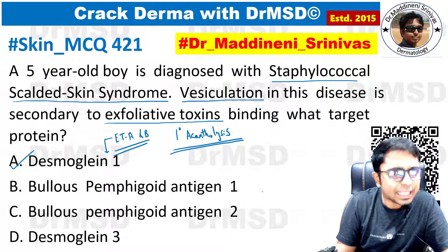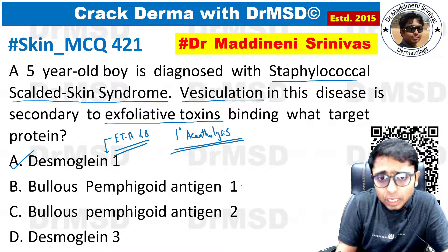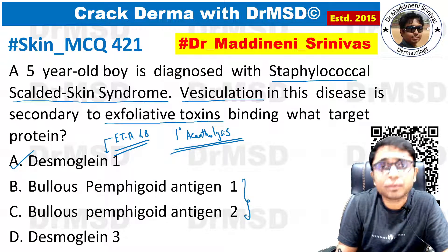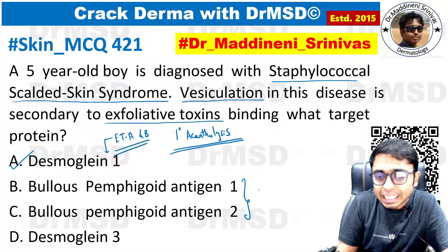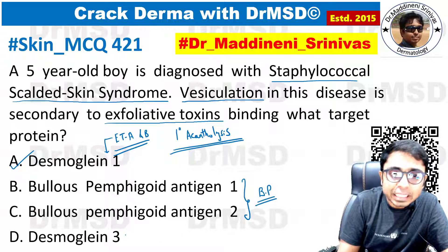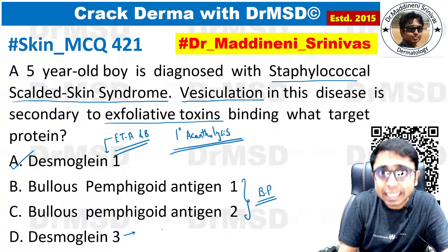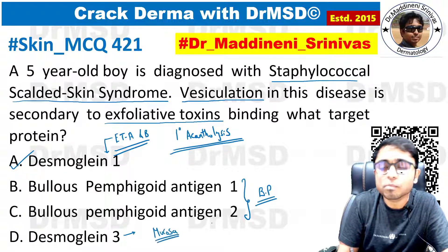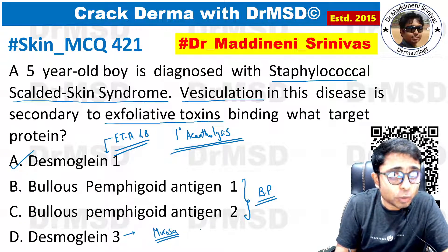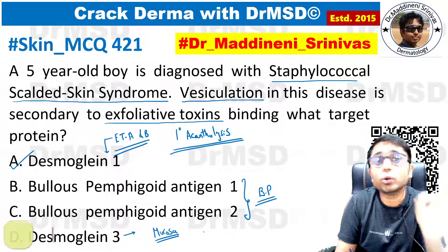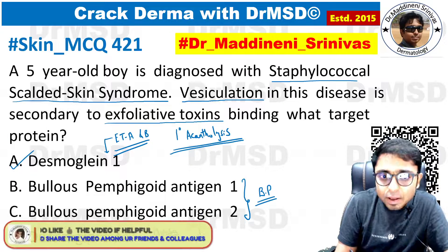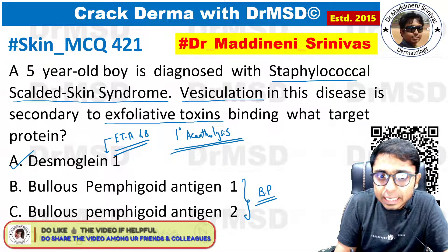Looking at the other options: bullous pemphigoid antigen 1 and bullous pemphigoid antigen 2 both have antibodies in the case of bullous pemphigoid. Desmoglein 3 is mainly present in the mucosa, and both desmoglein 3 and desmoglein 1 have autoantibodies in pemphigus vulgaris.